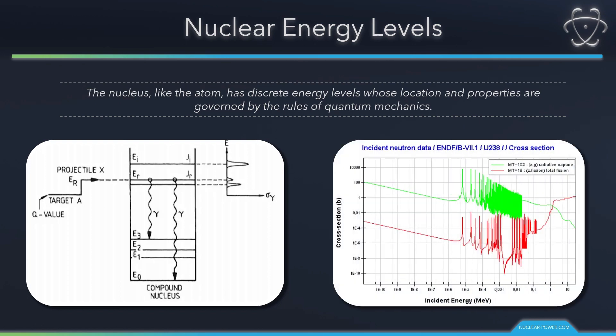Nuclei with equal proton numbers and equal mass number, but different energy states are known as isomers. The locations of the excited states differ for each nucleus. The excitation energy depends on the internal structure of each nucleus. For this reason, there are resonance peaks throughout nuclear cross-sections.